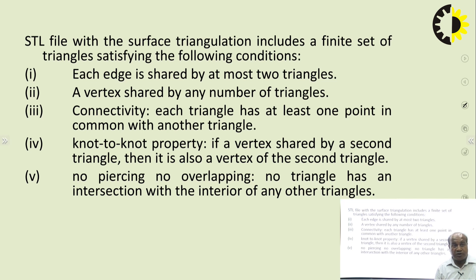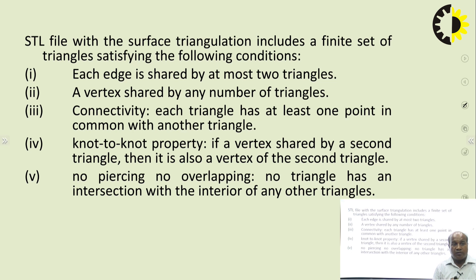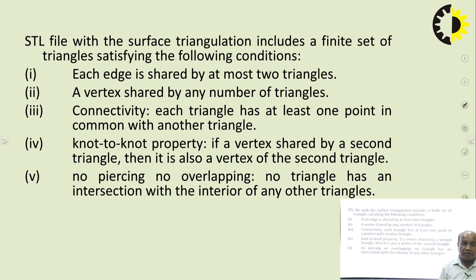An STL file with surface triangulation includes a finite set of triangles satisfying the following conditions. Each edge is shared by at most two triangles. A vertex of a triangle can be shared by any number of triangles. With the connectivity property, each triangle has at least one point in common with another triangle — it is a must requirement. The non-known property states that if a vertex is shared by a second triangle, then it is also a vertex of that second triangle. No piercing, no overlapping: no triangle has an intersection with the interior of any other triangle.